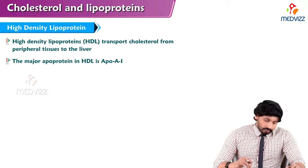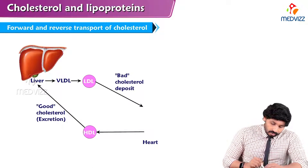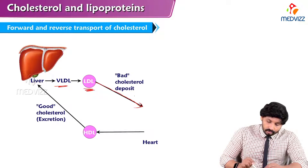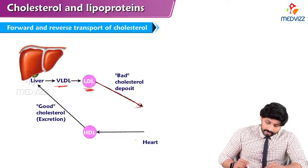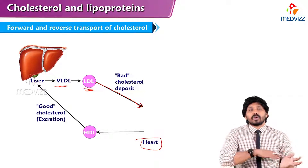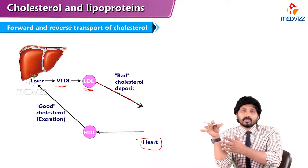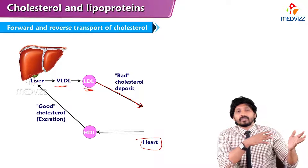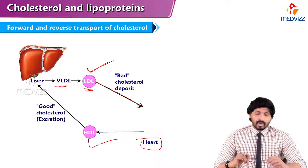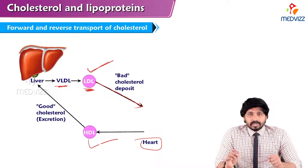Regarding forward and reverse transport of cholesterol: from the liver, VLDL is produced and gives rise to LDL, which deposits cholesterol. HDL picks up cholesterol from the heart and extra-hepatic tissues and dumps it into the liver — that is reverse cholesterol transport. Forwarding of cholesterol is by VLDL and LDL, while reverse transport from extra-hepatic tissues is by HDL. That is why LDL is considered bad cholesterol and HDL is considered good cholesterol. That's all about lipoprotein metabolism and their clinical significance. Thanks for watching.